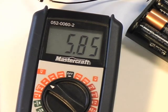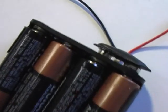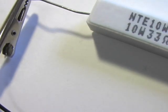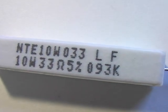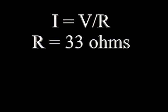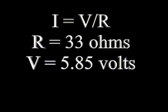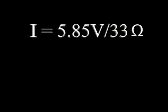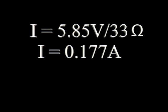Now that we know voltage and resistance, we can use Ohm's Law to determine how much current is flowing in the circuit. We will use I equals V divided by R — current equals voltage divided by resistance. We know that R is 33 ohms and V is 5.85 volts. Substituting, our formula becomes I equals 5.85 volts divided by 33 ohms. Doing the division, we determine that I equals 0.177 amperes.